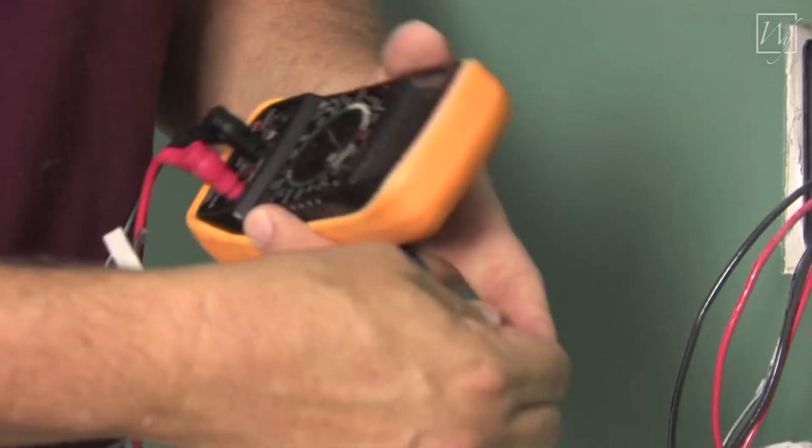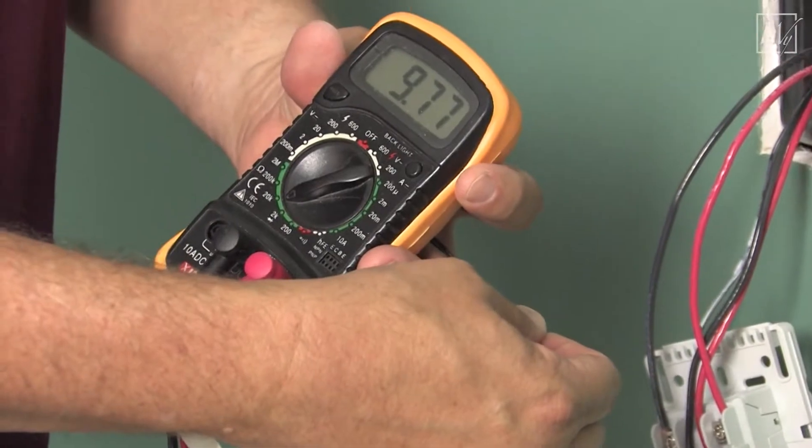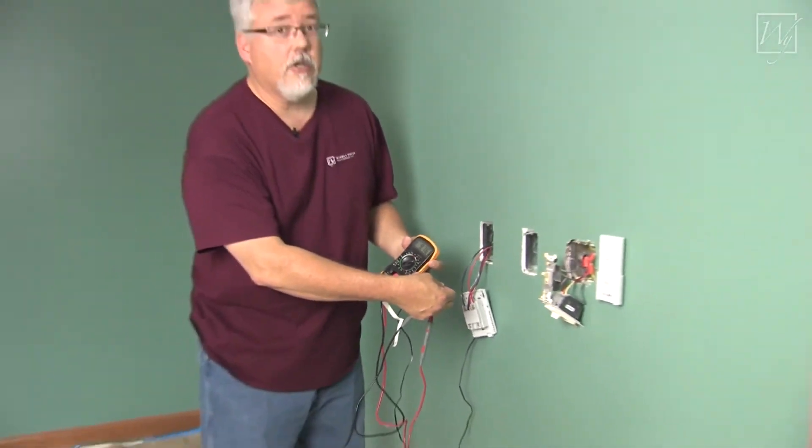So I'm going to attach one wire here, the other wire here, and we're getting 9.7. So it tells us that our thermostat sensor is good.